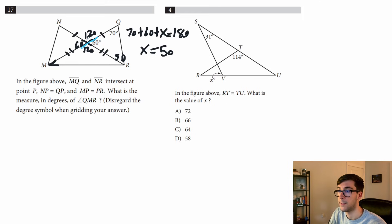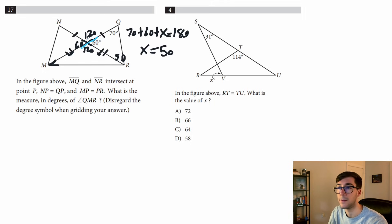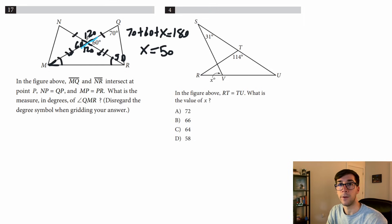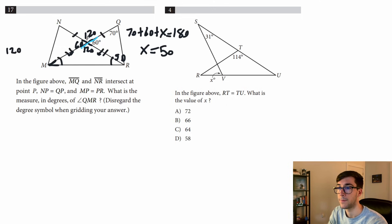Now we have a triangle at the bottom. We know two sides are equal, making it an isosceles triangle — which means the two base angles are equal. So if the top angle is 120 and the other two are equal, it's 120 plus 2x equals 180, giving us x equals 30. The answer is 30 degrees.